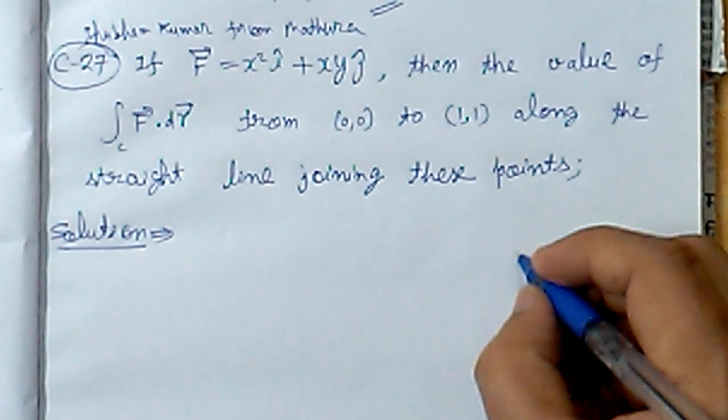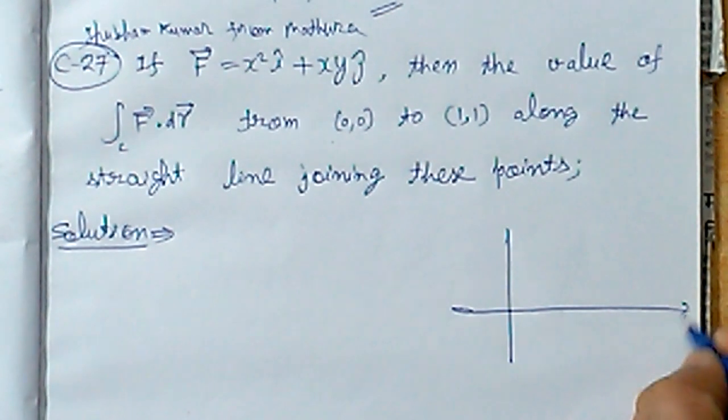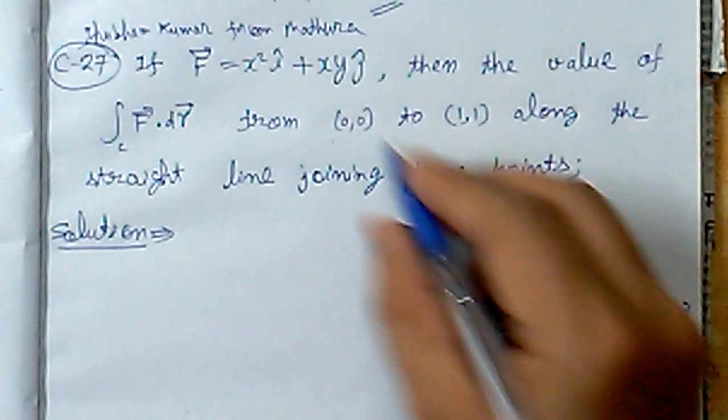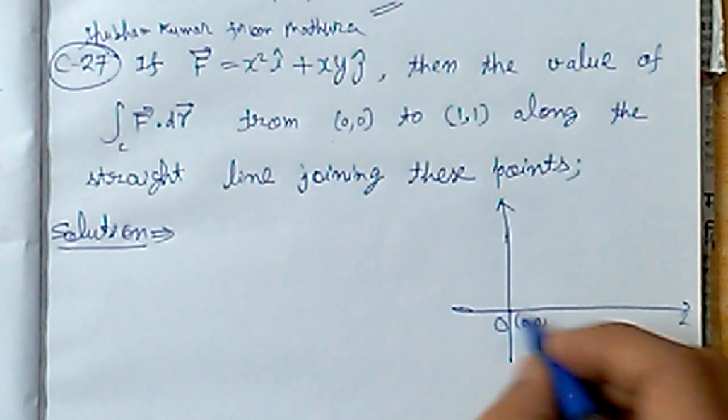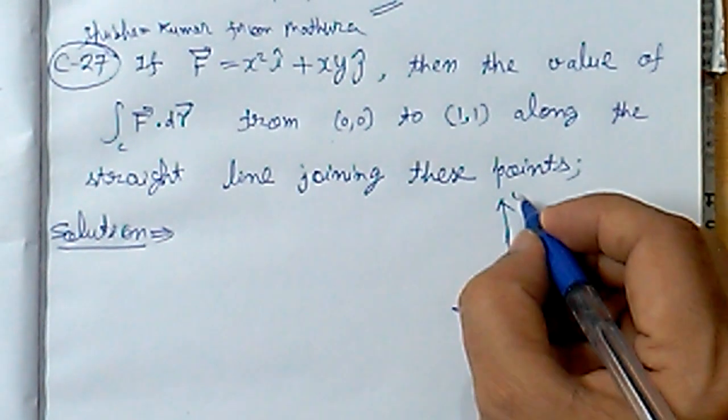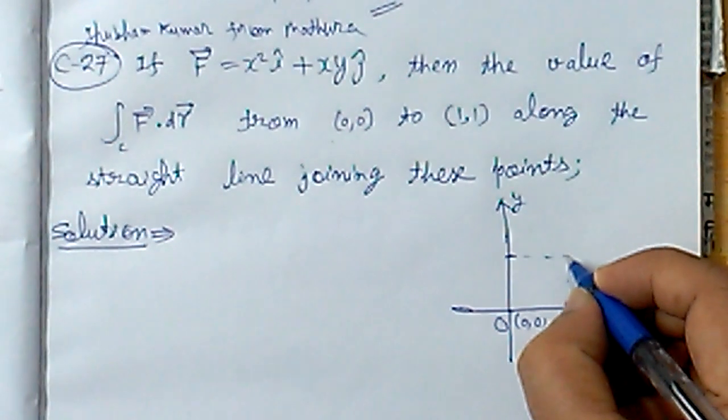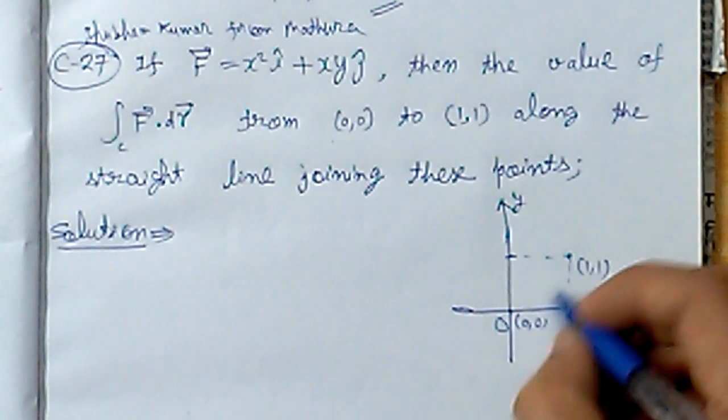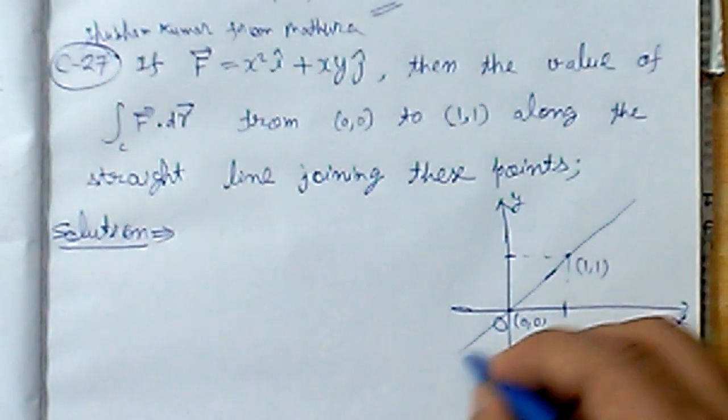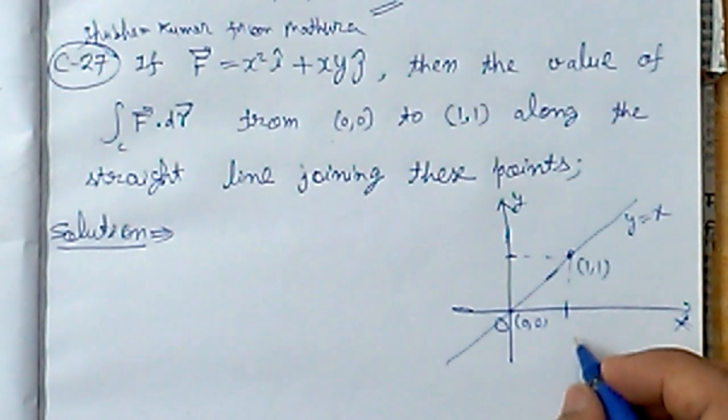Let me plot these points. The first point is (0,0) which is the origin, and the second point is (1,1), meaning one unit on the x-axis and one unit on the y-axis. So this point is at (1,1). The line joining these two points goes from the origin to here.